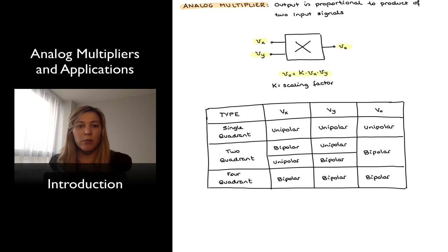Depending on the possible polarity of the input signals, analog multipliers can be classified into single quadrant multipliers, where they only accept a single polarity for both input signals, so both input signals are unipolar and therefore the output is also unipolar.